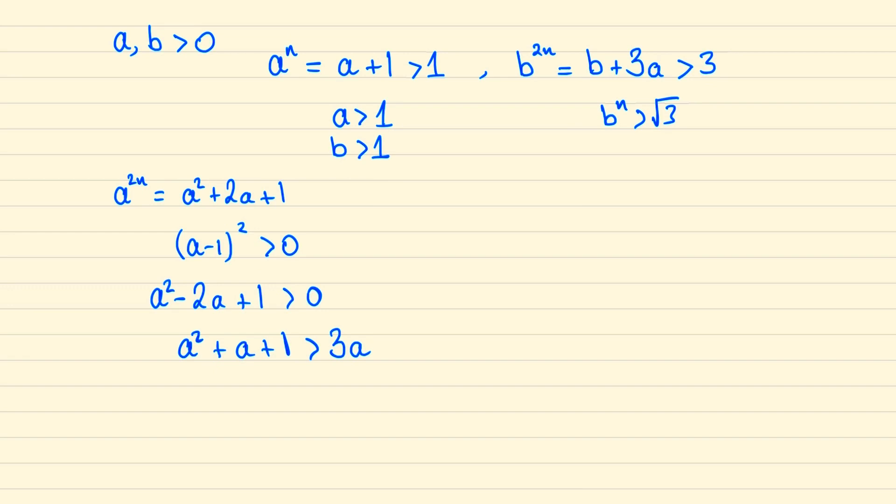Now we can write the left side of this inequality as a to the 2n minus a, and the right side as b to the 2n minus b, and so we can write this as a to the 2n minus b to the 2n is greater than a minus b.